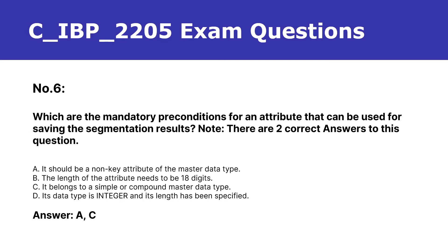Number 6. Which are the mandatory preconditions for an attribute that can be used for saving the segmentation results? Note: there are two correct answers to this question. A. It should be a non-key attribute of the master data type. B. The length of the attribute needs to be 18 digits. C. It belongs to a simple or compound master data type. D. Its data type is integer and its length has been specified. Answer: A, C.